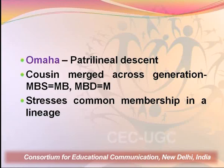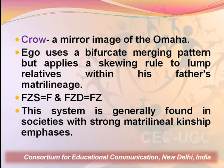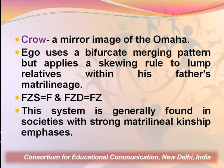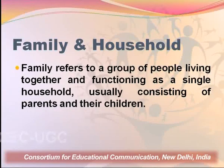In the Omaha system, the principle of unity of lineage works and different generations are clubbed into the same class. The Crow system is a mirror image of Omaha — Omaha is patrilineal, Crow is matrilineal. In the Crow system, the ego uses a bifurcate merging pattern but applies a skewing rule to lump relatives within his father's matrilineage. Father's sister's son equals father, and father's sister's daughter equals father's sister. This principle helps understand unity of lineage and is generally found in societies with a strong matrilineal kinship emphasis.